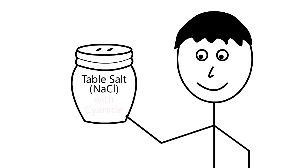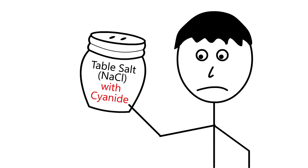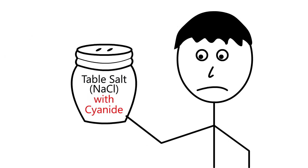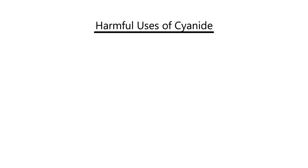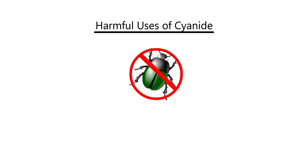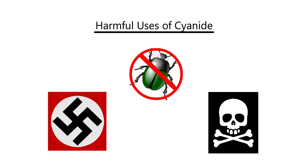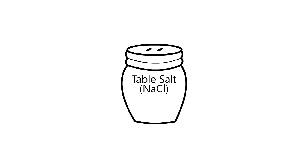I'm going to be blunt with you: there may be some cyanide in your table salt. But before you go throw your salt shaker across the room in fear, let me assure you it's completely safe. You might be asking yourself, how is that possible? This is the same substance used in insecticides and pesticides, and even more horribly, in Nazi extermination camps and as a means of suicide. How can such a deadly substance be found in the most ubiquitous ingredient?